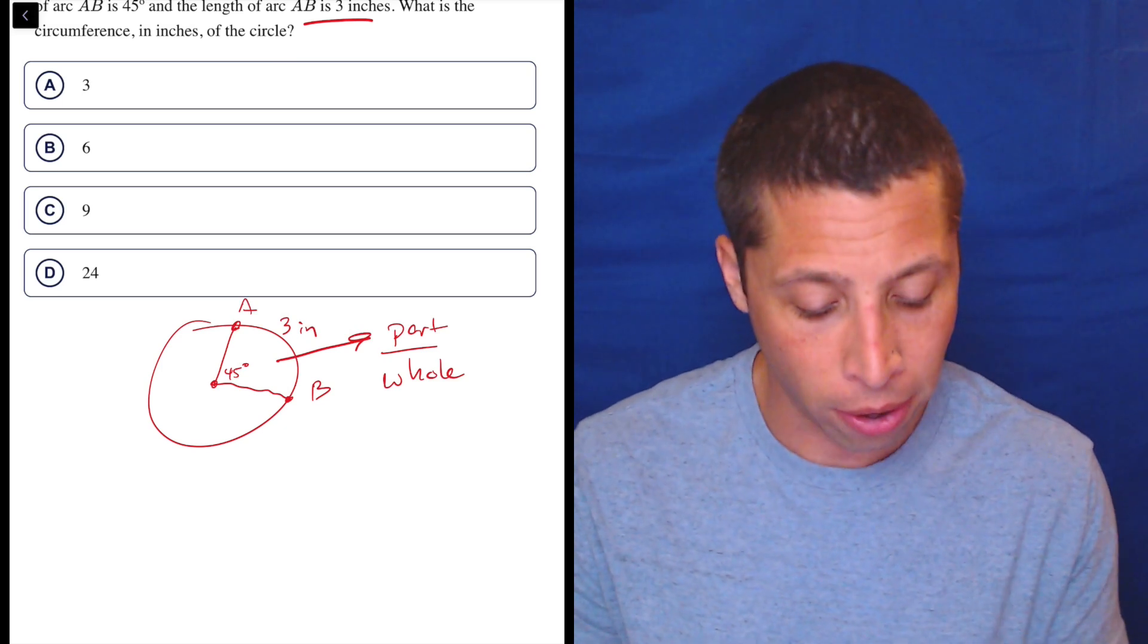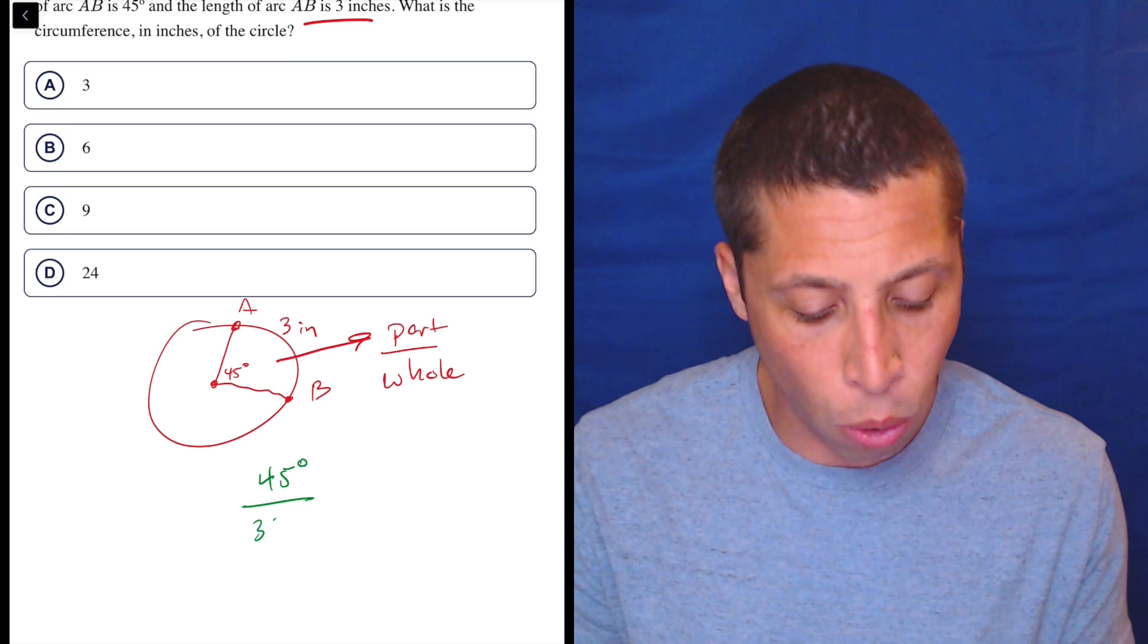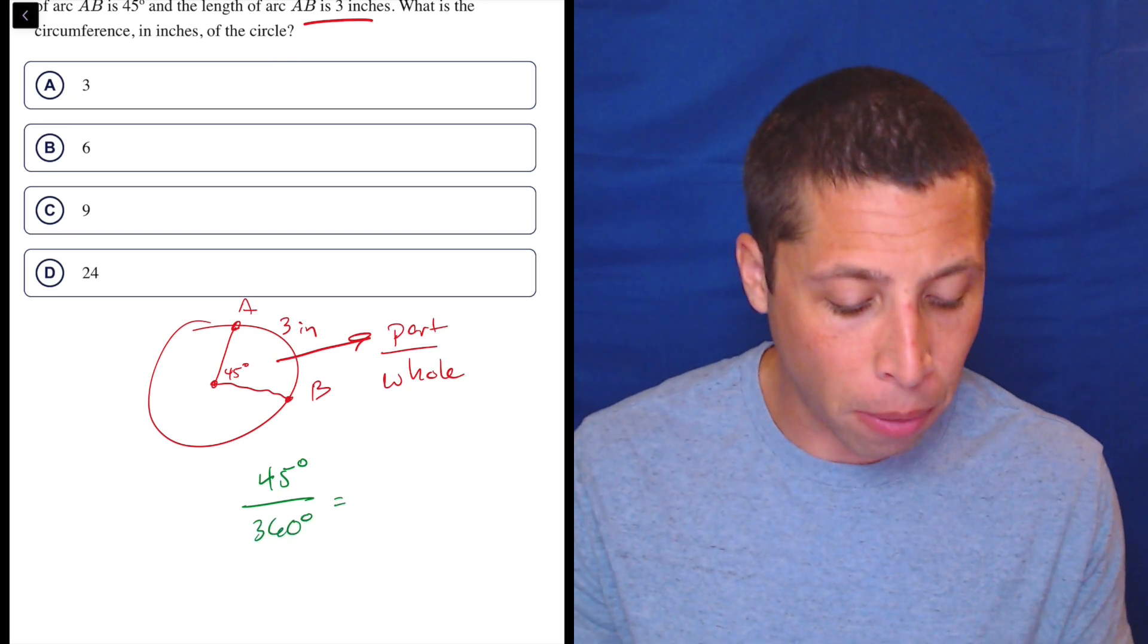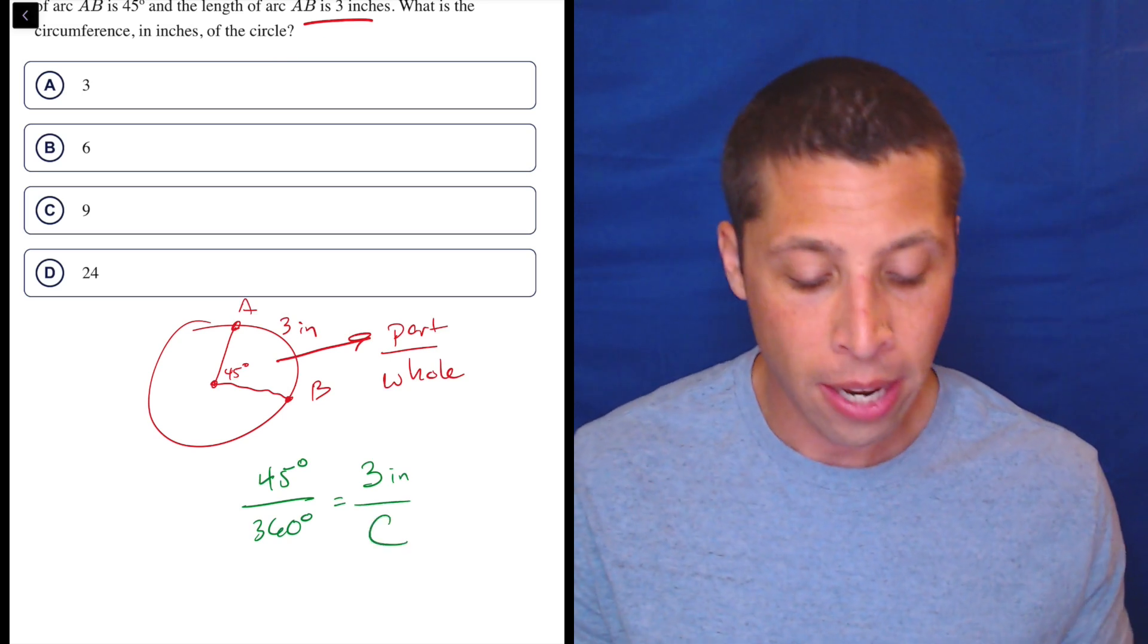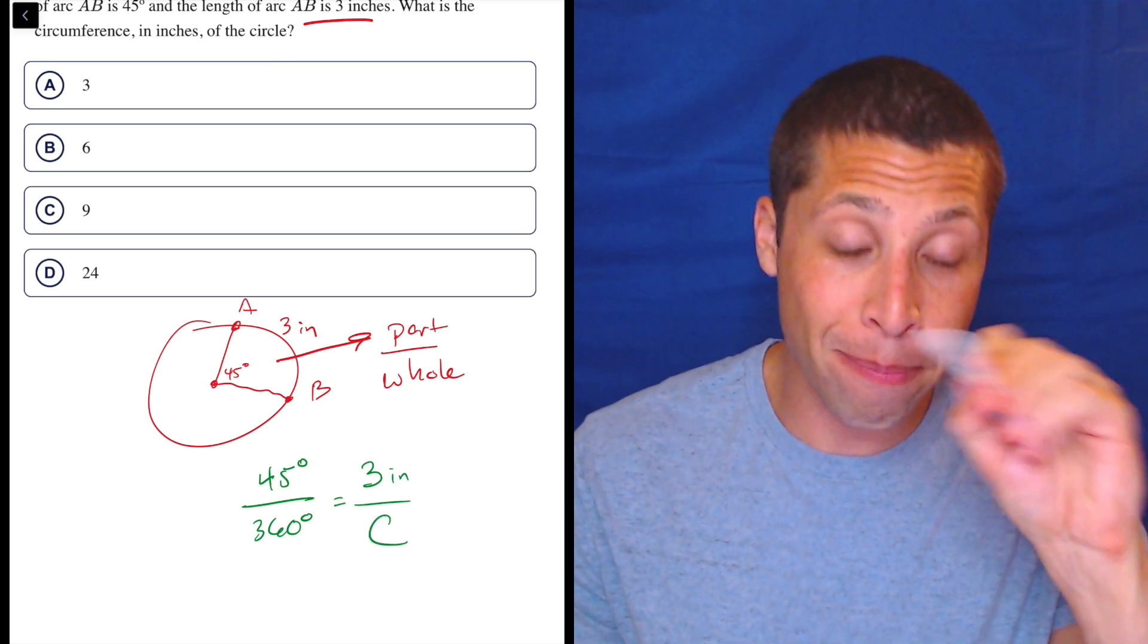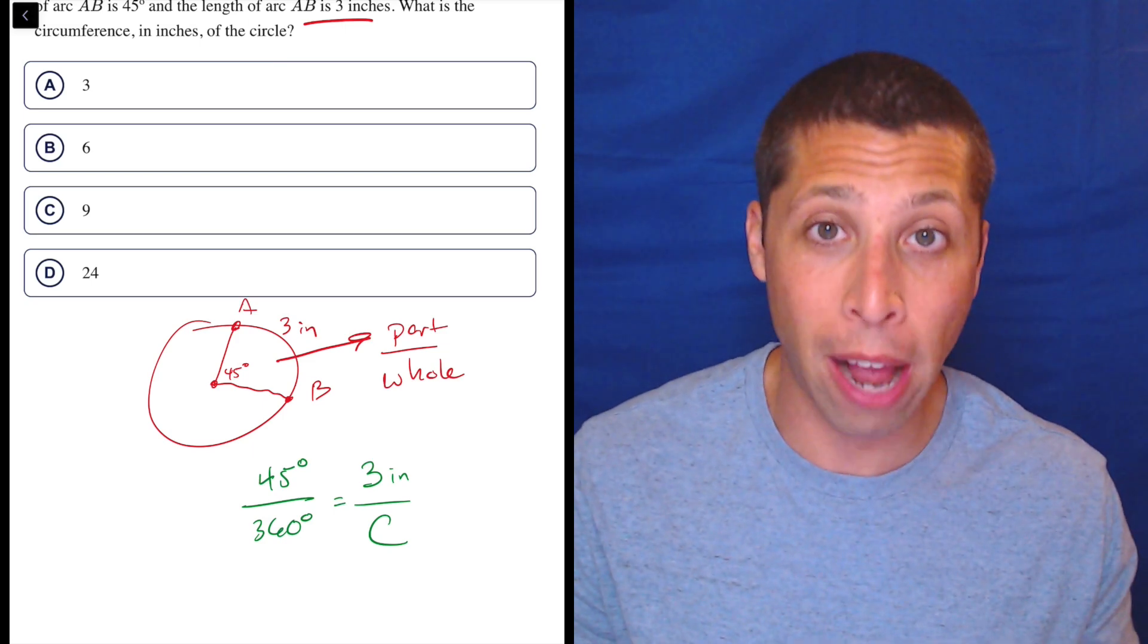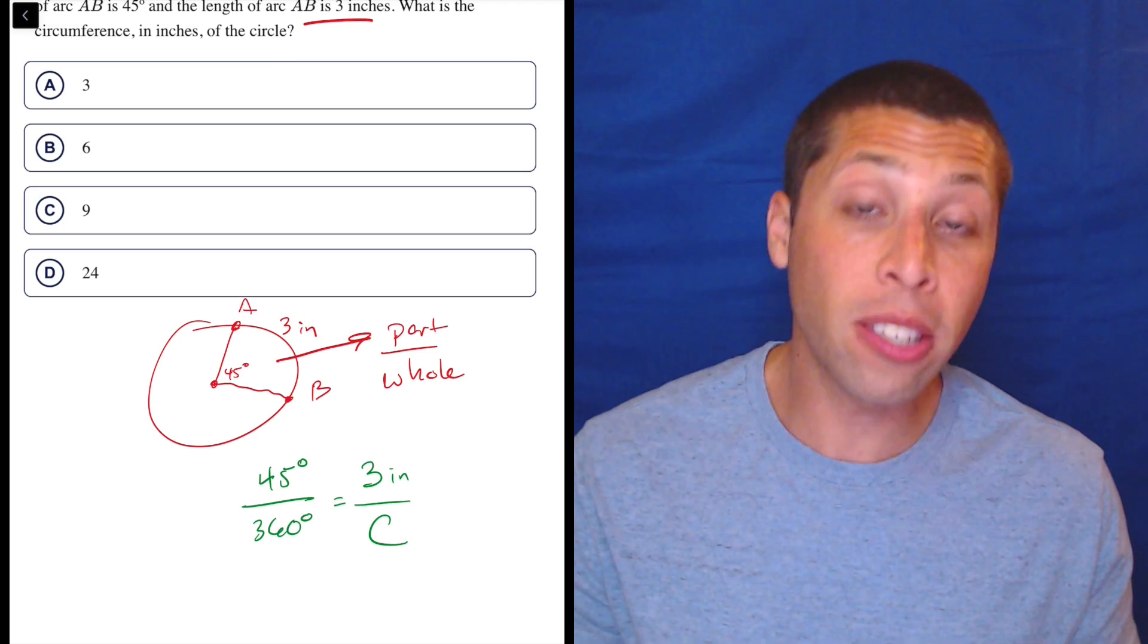The part that we care about is 45 degrees. There's a whole number of 360 degrees in a circle. We care about the part of the arc that is three inches, but the whole arc, that's the circumference. An arc length is part of a circumference and the whole circumference is the whole way around the circle. Arc is part of the way around, circumference whole way around. So this is what we're supposed to set up.